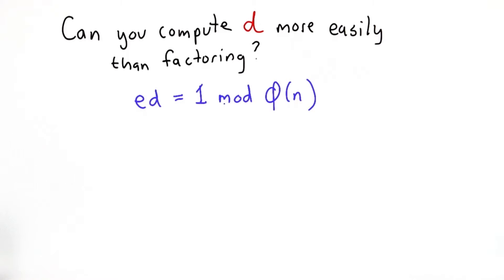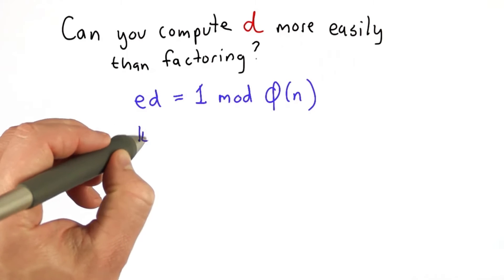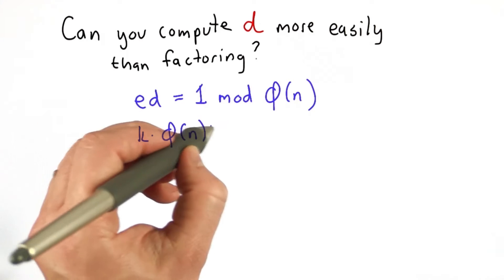That means that there's some integer k, such that k times the totient of n is equal to ed minus 1.